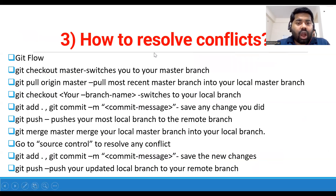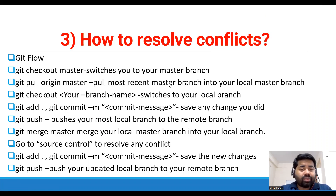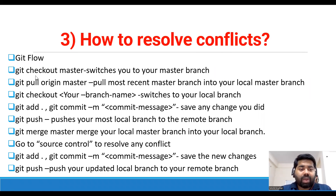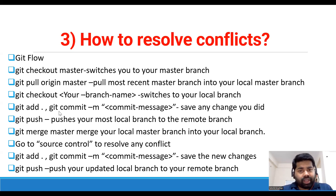Next question: how to resolve a Git conflict. You get conflicts when you merge your changes. Here are simple steps: first, run 'git checkout master' to switch to your master branch. Then run 'git pull origin master' to pull the most recent code into your local master branch.